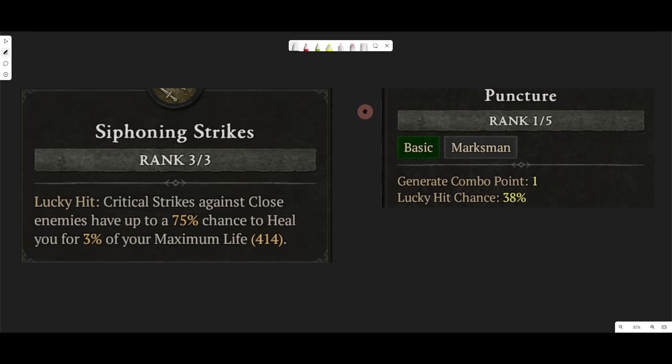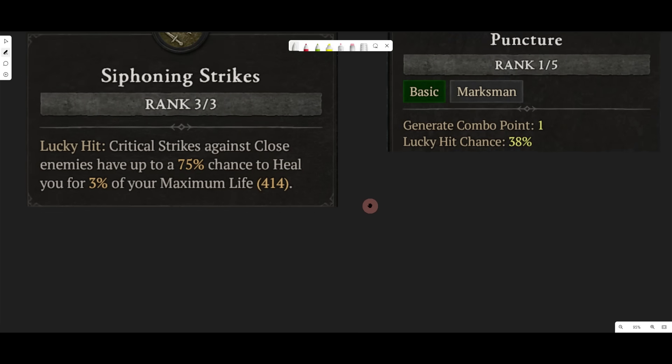So now let's talk about Siphoning Strikes. Now that we understand how Lucky Hit works, Siphoning Strikes adds one more little complication, which is that critical strikes against close enemies have up to a 75% chance to heal you for 3% max life. So there's a few things that have to happen. One, you've got to be close. Then if you're close to the enemy, then you've got to get a critical strike. Then if you get a critical strike, then you've got to get a Lucky Hit.